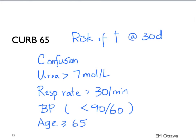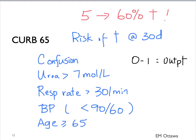Each criterion is given one point. The higher the number of points, the higher the risk of mortality at 30 days. Patients with a score of 5 have an almost 60% chance of death at 30 days. Patients with a score of 0 to 1 are usually treated as outpatients. A patient with a score of 4 to 5 needs hospitalization and might need the ICU. For those with a score of 2 to 3, they can consider a very short hospital stay unless they have very close outpatient follow-up.